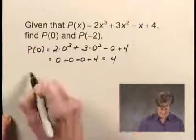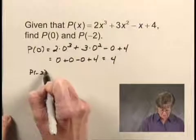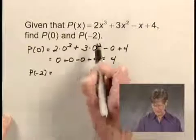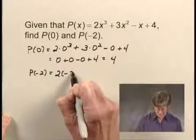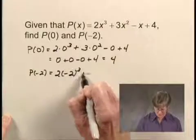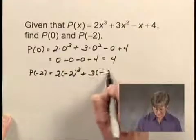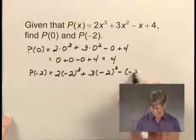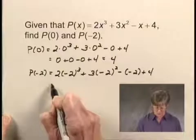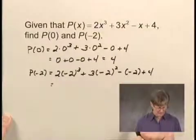And now let's find P(negative 2). Here we're going to substitute negative 2 where x appears in the polynomial. So we'll have 2 times negative 2 cubed plus 3 times negative 2 squared minus negative 2 plus 4. And now let's just do these calculations.